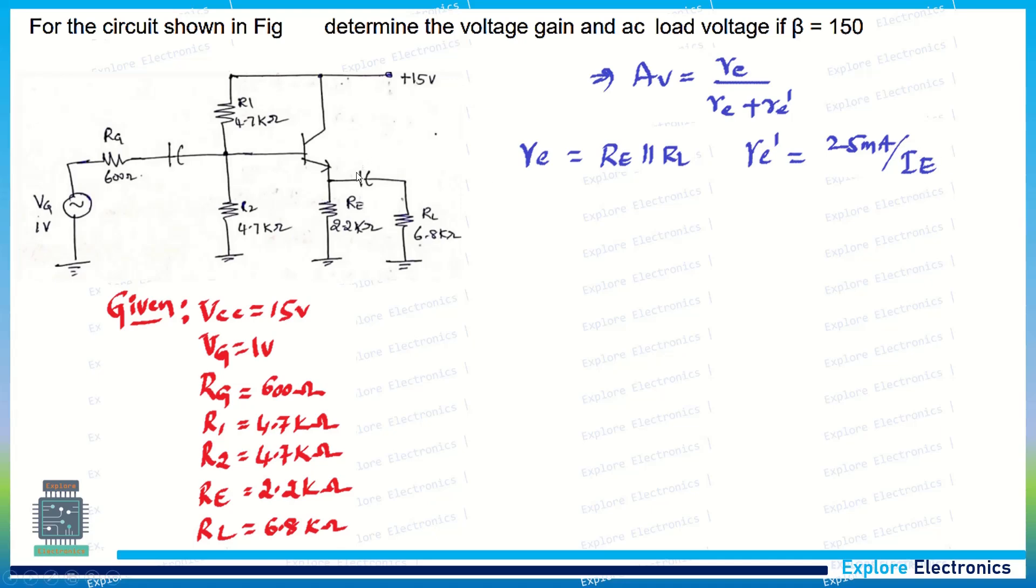Before going to re' calculation we require IE. IE is the emitter current. To find IE we require the voltage at the emitter first. To get the voltage at the emitter we need to find out VB, the voltage at the base.